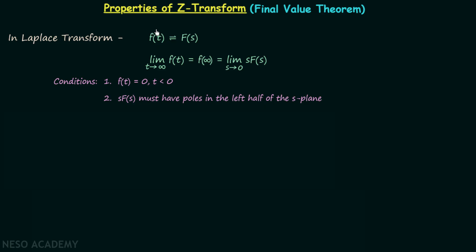Let's say there is a continuous time signal F(t) and this continuous time signal has the corresponding Laplace transform F(S). The final value of F(t), which is limit t tending to infinity of F(t), or F(∞), is equal to limit S tending to 0 of S multiplied by F(S). When you calculate this limit you will have the final value of the signal F(t), and this is known as the final value theorem in Laplace transform.